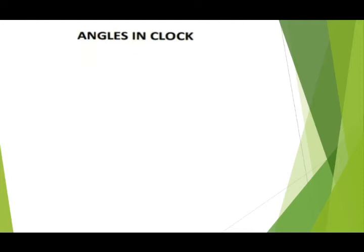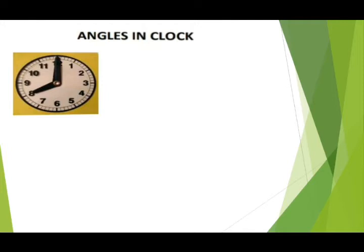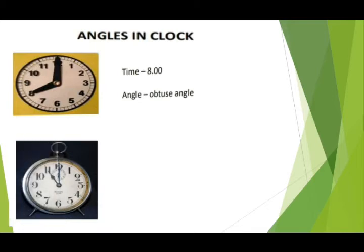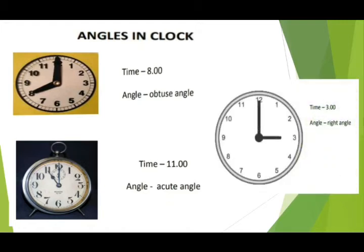Angles in a clock — here you can see the picture of a clock. At 8 o'clock, the angle between the two hands is more than 90 degrees, so it is called an obtuse angle. At 11 o'clock, the angle is less than 90 degrees, so it is an acute angle. At 3 o'clock, the angle is exactly 90 degrees, so it is a right angle.